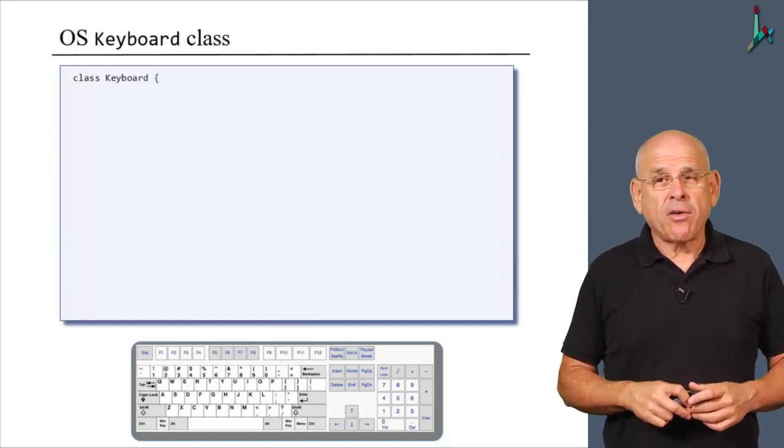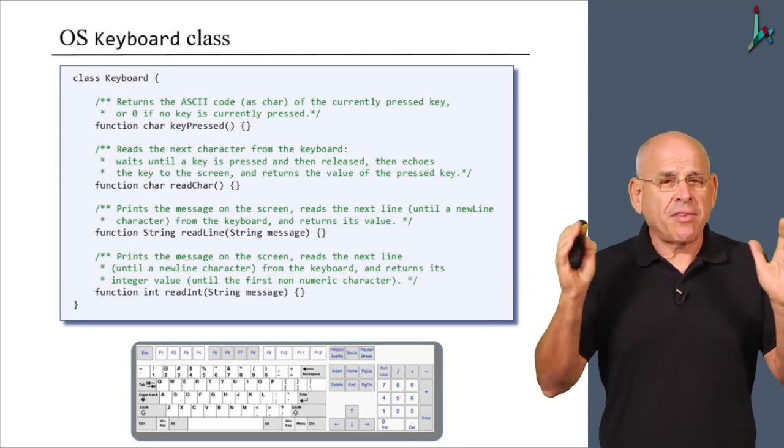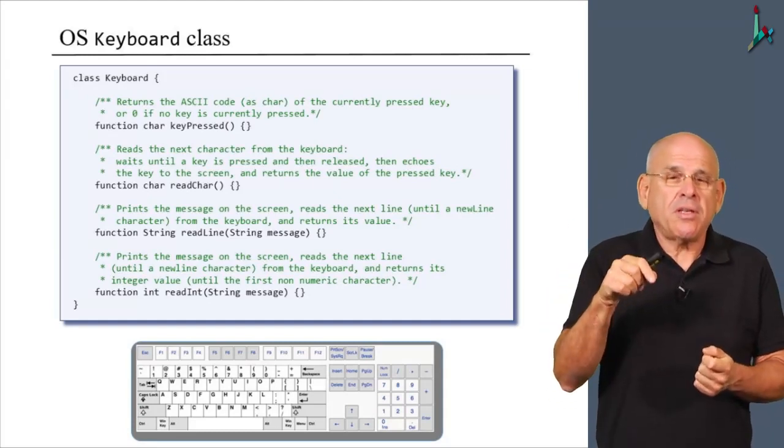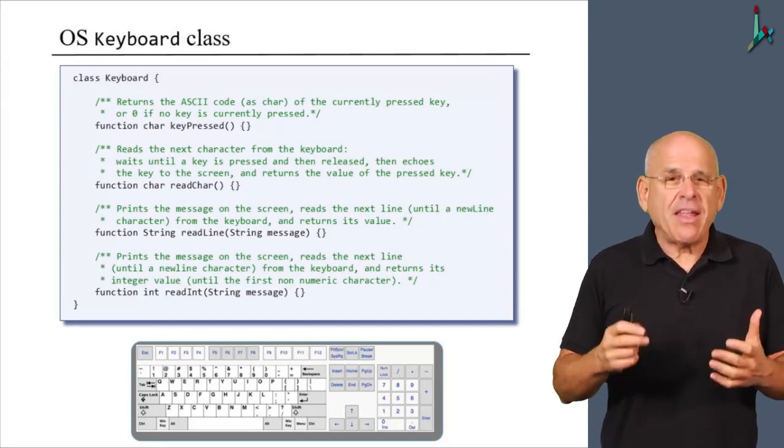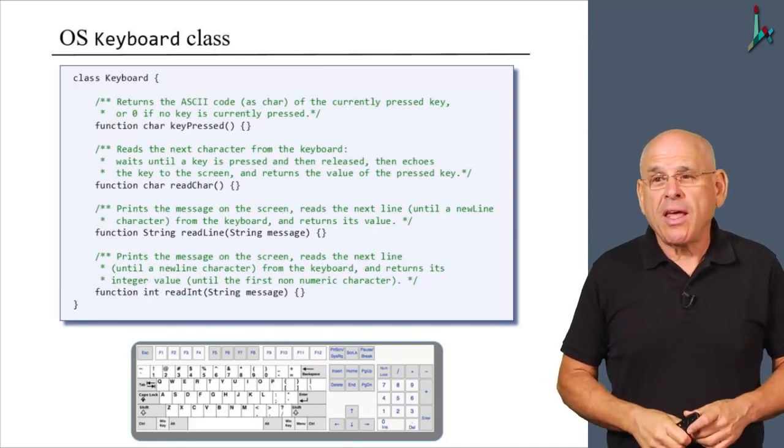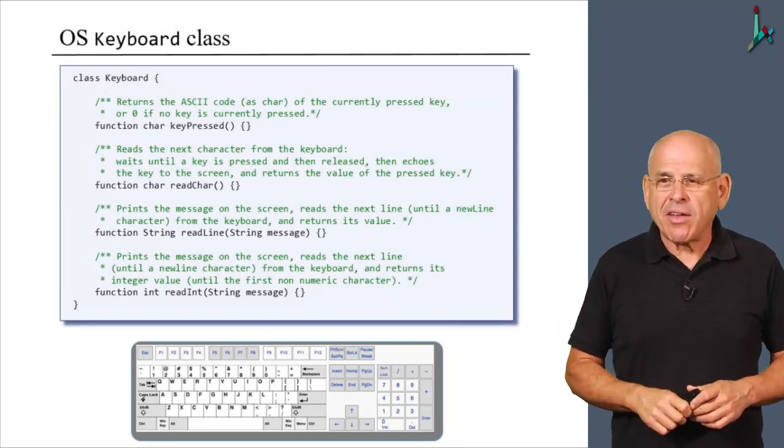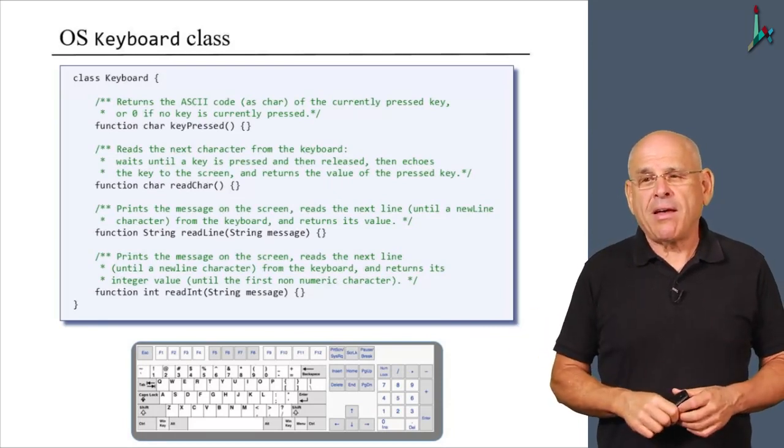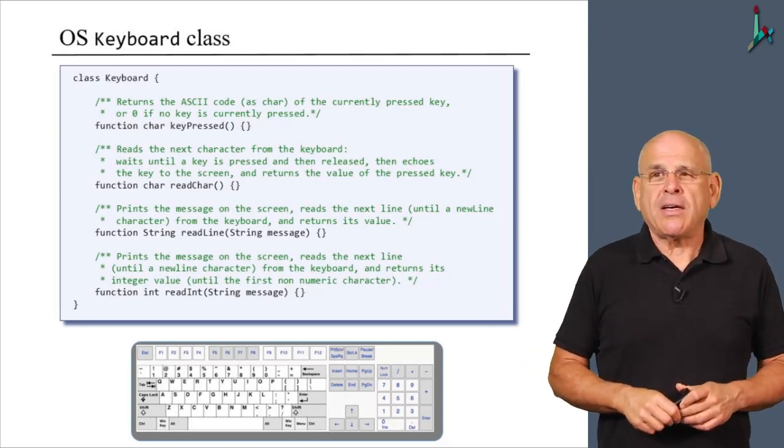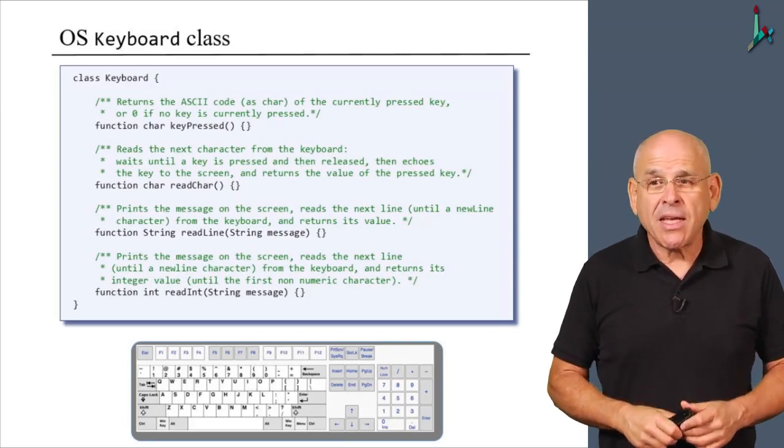We have chosen to base this class on four subroutines, and here they are. There's no need to read the documentation because we're going to delve into every one of these subroutines and implement it carefully. Basically, key pressed is designed to capture the event of pressing a key on the keyboard. Read car is designed to capture the event of reading a character from the keyboard. And then we have read line, which reads a string up to an enter or carriage return character. And finally, read int does the same, but interprets what it read as an integer. Taken together, this is the API of our keyboard adapter or keyboard class. Let's go on and begin to implement this class, starting with key press.